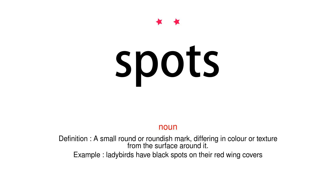Noun. Definition. A small round or roundish mark, differing in color or texture from the surface around it. Example. Ladybirds have black spots on their red wing covers.